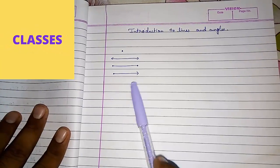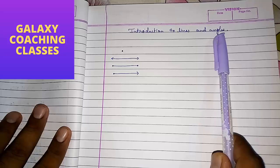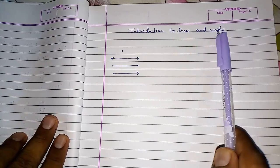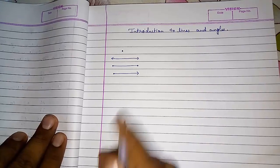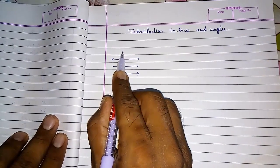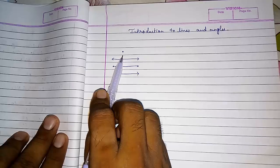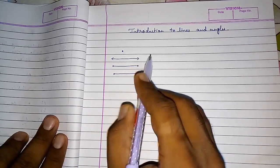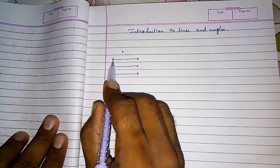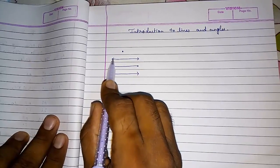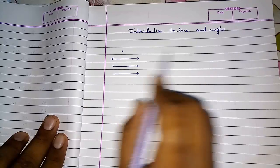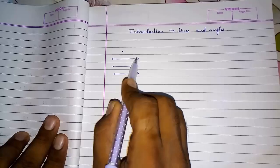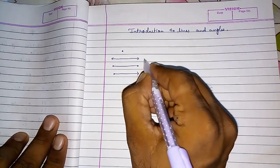Hello friends, today we are going to study about introduction to lines and angles. First we should know the basics. What is this? This is a point. This is a line — you can see two arrows are given at each end, so we cannot measure the line. A line is always going on and on, so we cannot measure it.